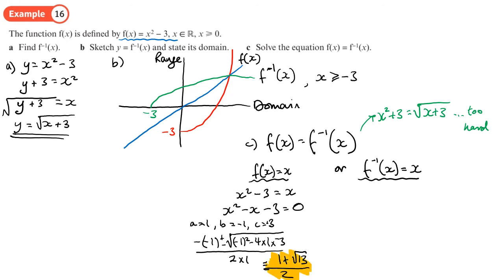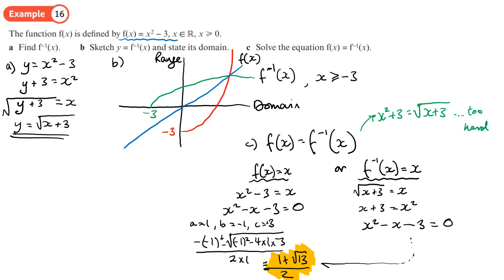Solving the inverse equals x gives root(x+3) = x, squaring both sides: x + 3 = x², which is x² - x - 3 = 0 — exactly the same equation, confirming the same solution. You should now be able to do exercise 2D on pages 38 to 39.